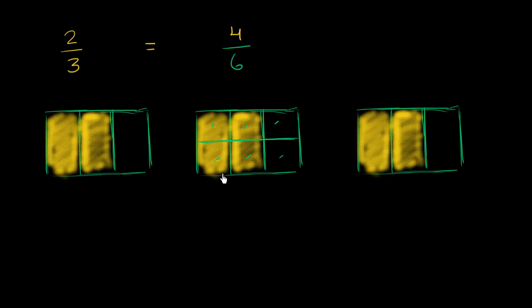Now we could do something very similar. Instead of dividing each of these thirds into two, we could divide each of these thirds into three. So I could draw three horizontal lines here. So let's see. One, two, three.